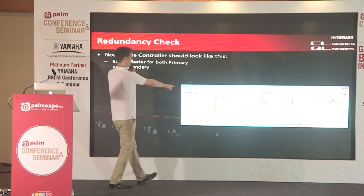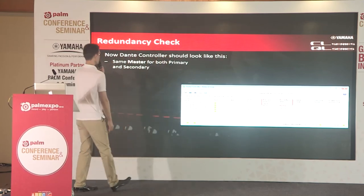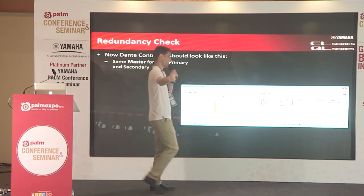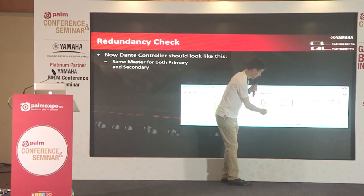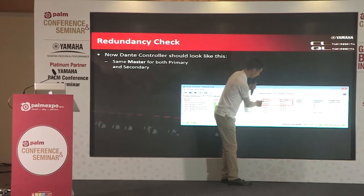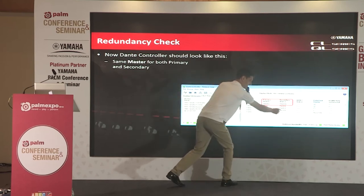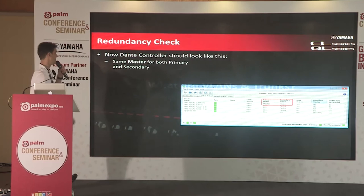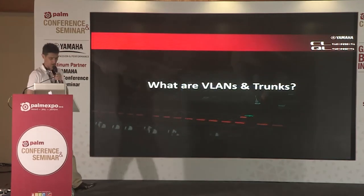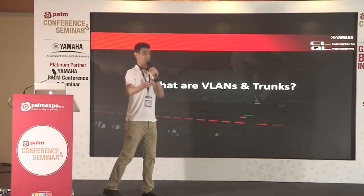Go back to your clock status page and check your network master. If your network is built correctly, you'll have the same master for both primary and secondary networks. If there are different masters, you know there's a problem somewhere, and you can then check your cables and connections.